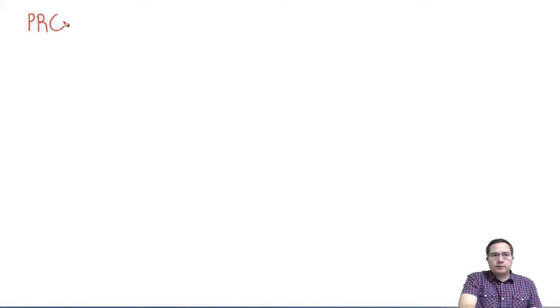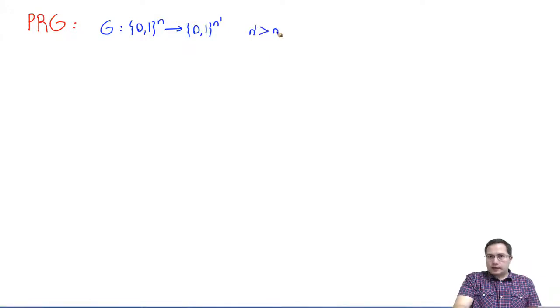A pseudo-random generator, PRG, let's say G, is a function that has an n-bit input and some n-prime bit output, such that n-prime is strictly greater than n, and n-prime is indeed some polynomial in n.